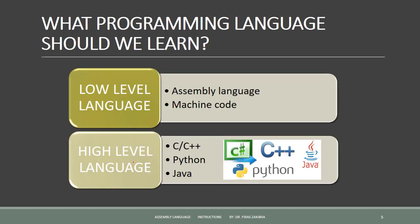Programming languages can be written in high-level or low-level languages. This depends on the task and also on the hardware being used. The two common types of low-level languages are machine code and assembly language.